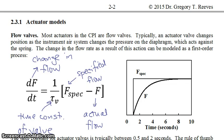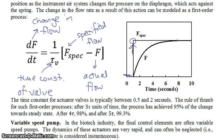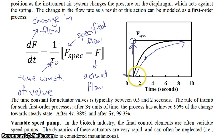The time constant for actuator valves is typically between 0.5 and 2 seconds, so they are quite rapid. As a rule of thumb — generally true for every first-order process — after about 3 tau units of time, the process has achieved 95% of the change toward its new steady state; after 4 tau, 98%; and after 5 tau, greater than 99%. So if the specified flow rate changes at t = 1 second, it takes some time for the actual flow to reach the new specified value.